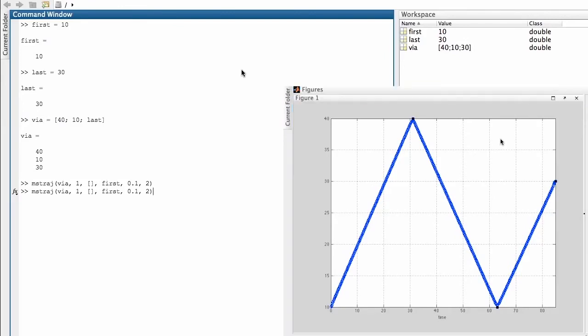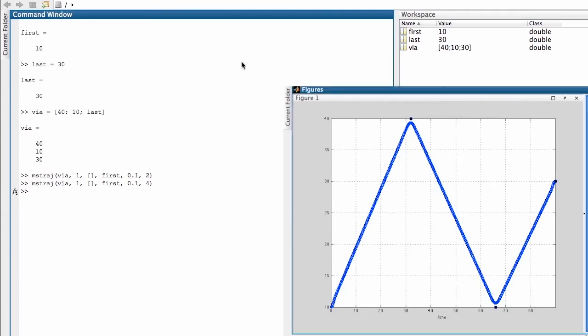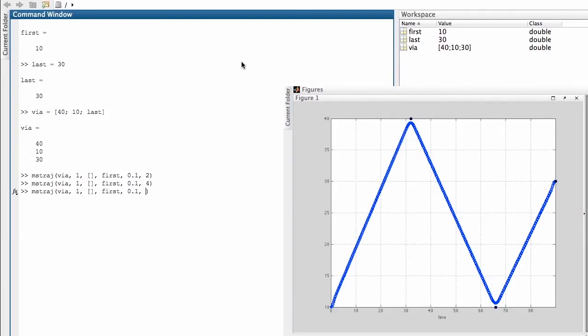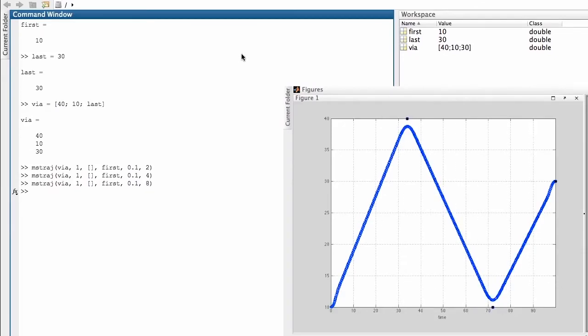Now let's look at what happens when we adjust some of the parameters. First thing I'm going to do is to increase the acceleration time. So I'm going to increase it from 2 to 4 and we can see that the trajectory has become more rounded and we can also see the distance by which the trajectory misses the via points has increased. I can increase the acceleration time even more, put it up to 8 and we can see again that the trajectory is much more rounded because the acceleration is much gentler but the distance between the trajectory and the via points has increased even further.